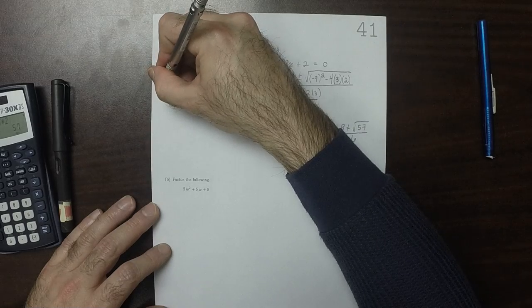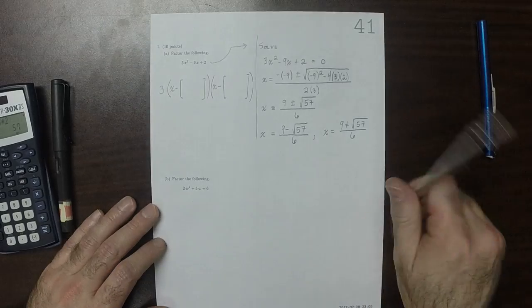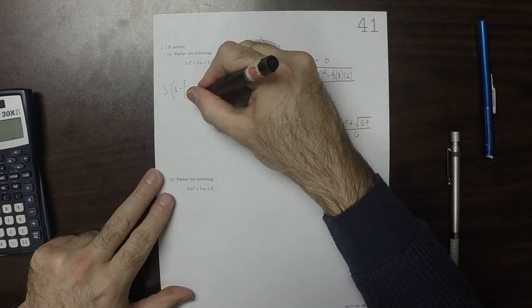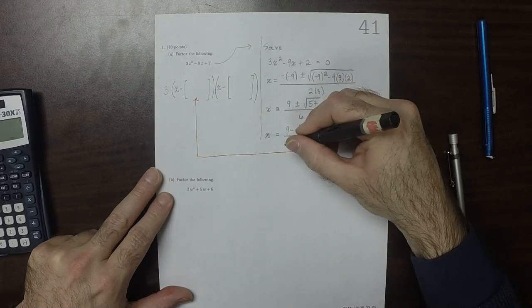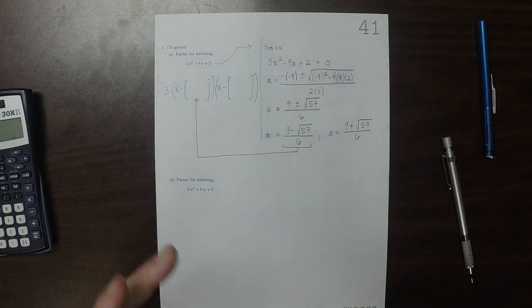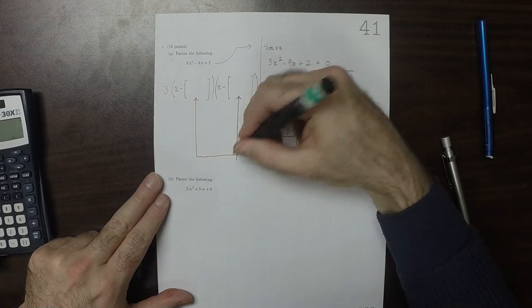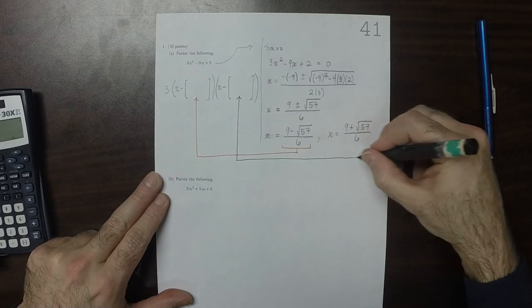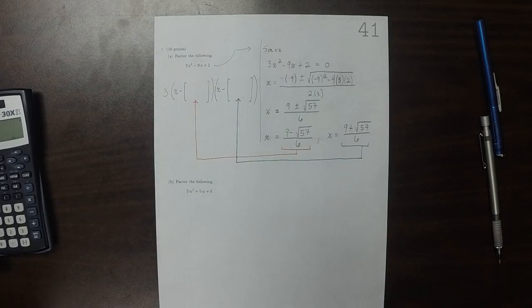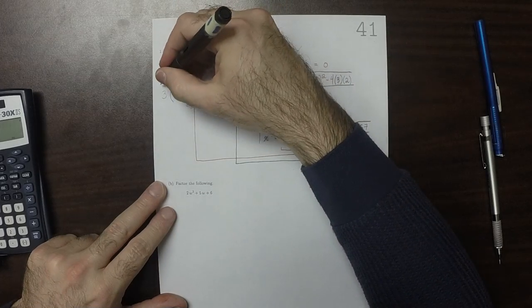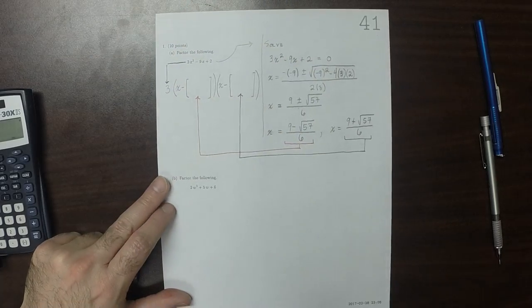And we have a 3 because the polynomial to factor was not monic. So this corresponds to this one. This corresponds to this one. And this corresponds to that one.